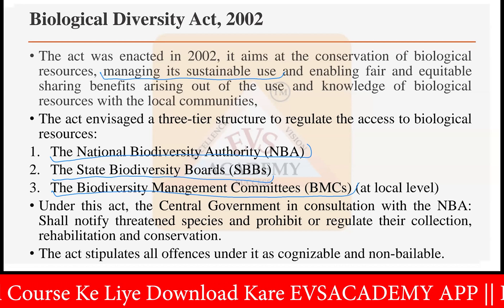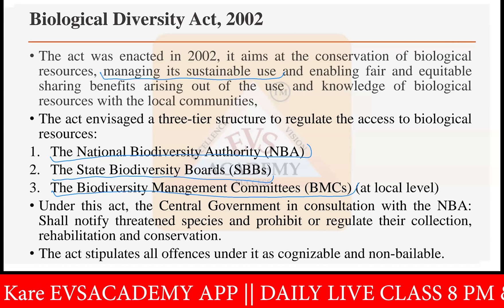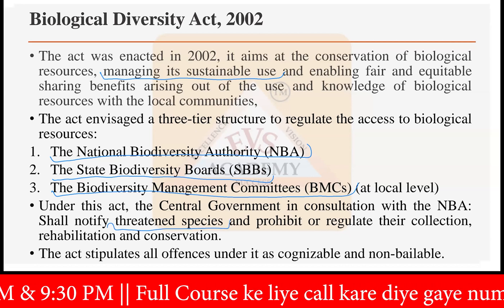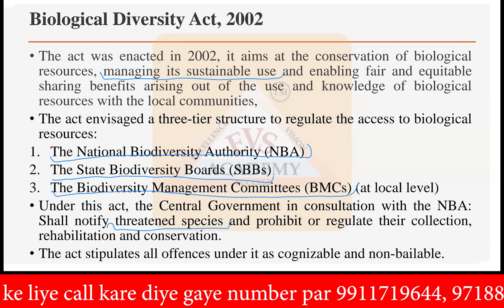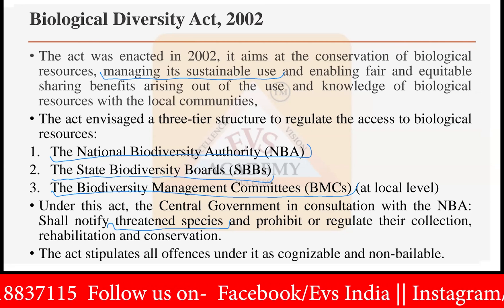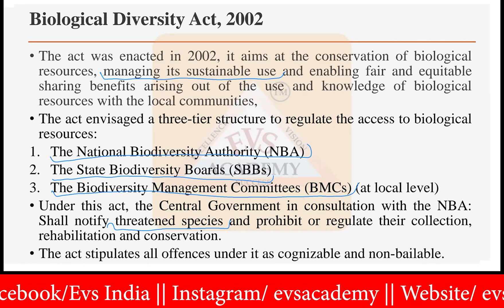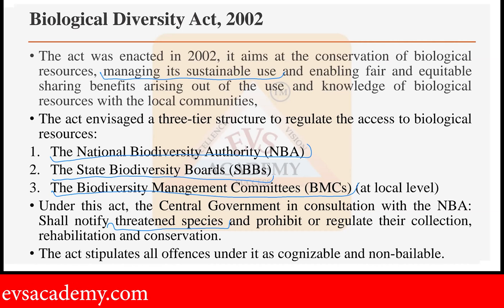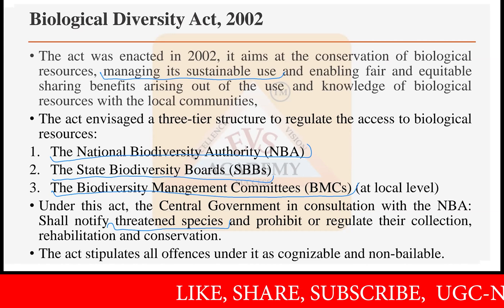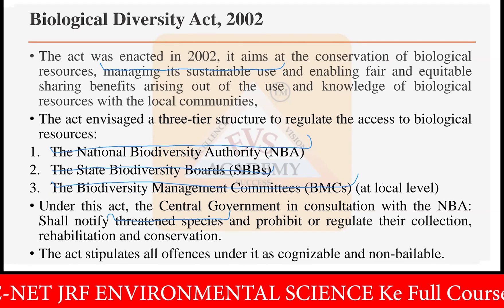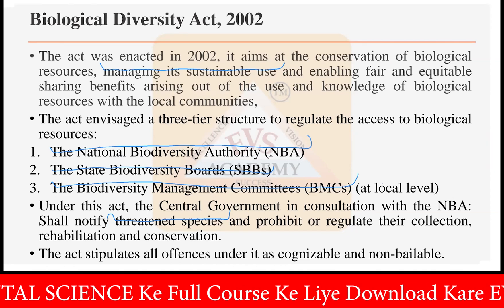Under this act, the central government in consultation with the National Biodiversity Authority (NBA) shall notify threatened species and prohibit or regulate their collection. All threatened species are notified under the NBA, and rehabilitation and conservation of those species is also done. The act stipulates all offenses under it as cognizable and non-bailable. This means if a person is caught violating the Biological Diversity Act, they would be immediately sent to jail, and bail cannot be granted for this kind of violation.